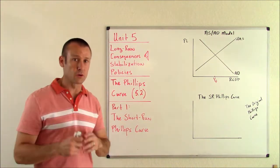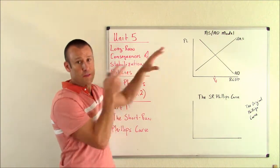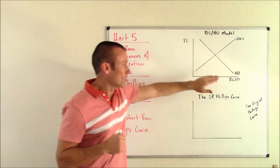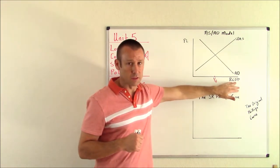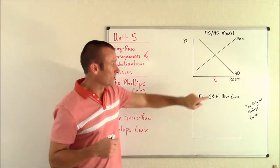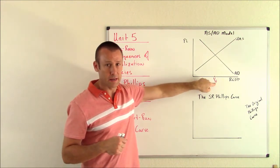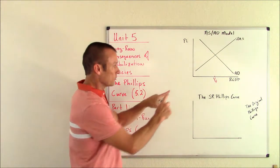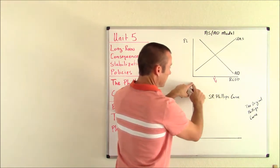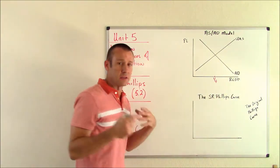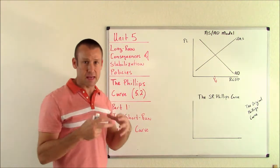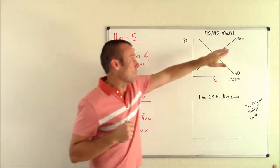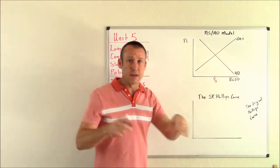Later on in this video you'll see me put inflation rate there and unemployment rate. To fully explain the short run Phillips curve, I want to bring back our old friend the AS/AD model. I've got price level on the vertical, real GDP on the horizontal. Right now I don't have an LRAS curve but I have put where Yf is - full employment output.